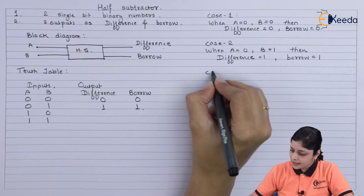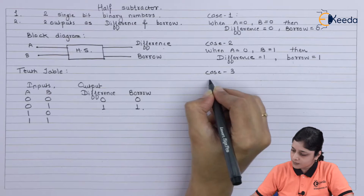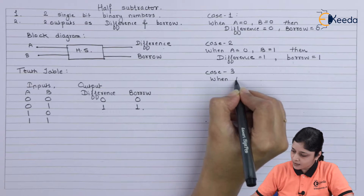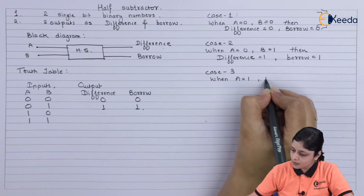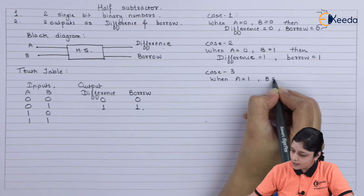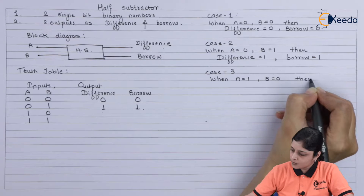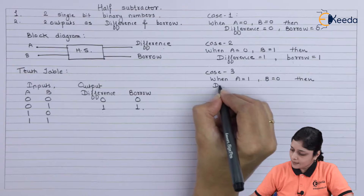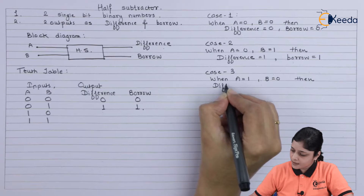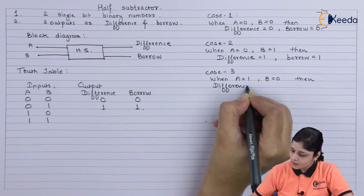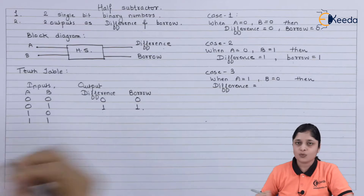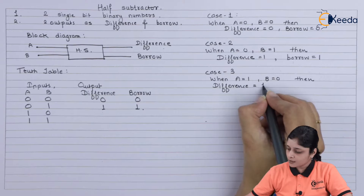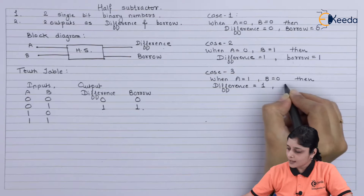Case 3: when A equals 1 and B equals 0, then difference equals 1 minus 0, which is always 1.